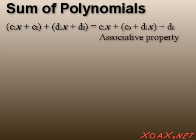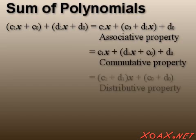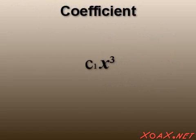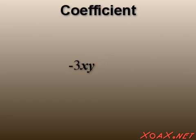To find the sum of two polynomials, we can simply collect the monomials that have the same variable multiples and add their coefficients via the distributive property. A coefficient is the constant multiplier of a monomial term. For example, the monomial -3xy has a coefficient of -3.